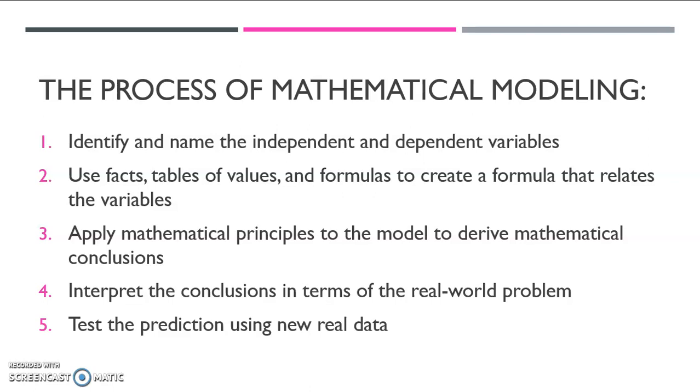Let's talk about the process of mathematical modeling. You'll notice I have five steps here. In this class, we will not be using all five of these steps. However, if you were going to use this in a job later in life, you would want to be able to use all five of these. The first and most important step is to identify and name the independent and dependent variables. It's really important to figure out which thing in the situation depends on the other thing.